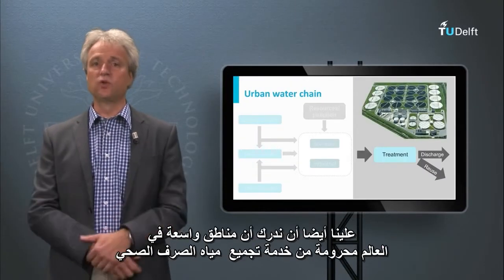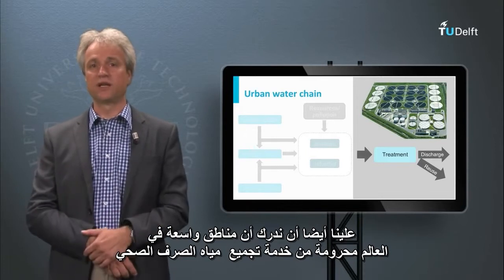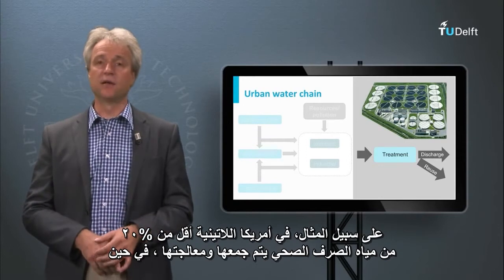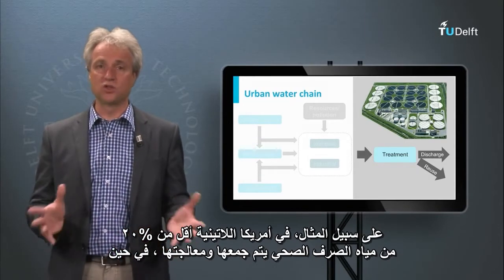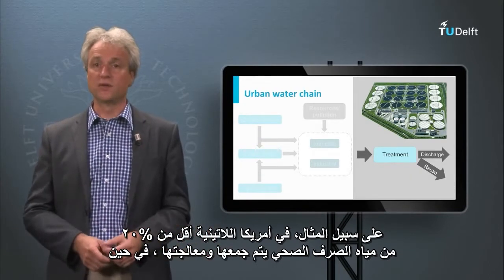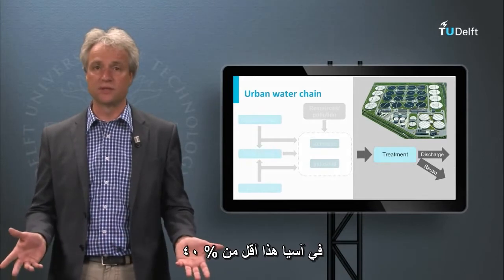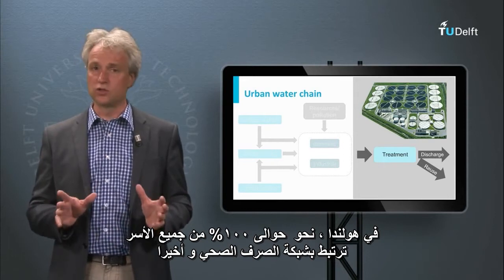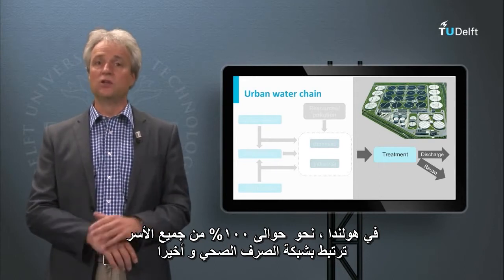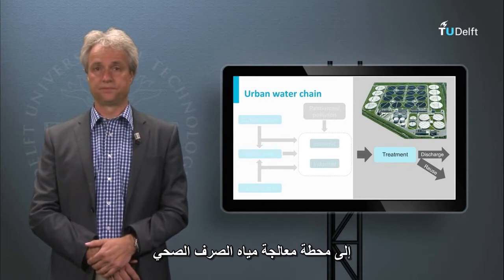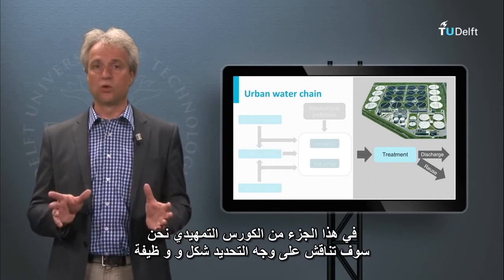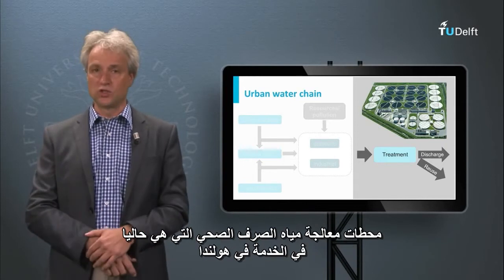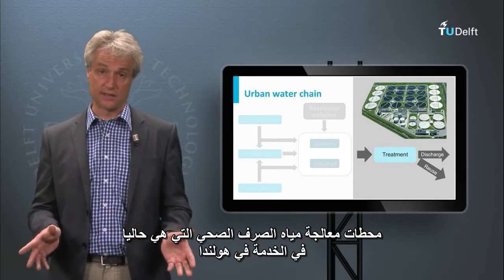We also have to realize that large areas in the world are yet deprived from adequate sewage collection and proper treatment. For instance, in Latin America less than 20% of the sewage is collected and treated, whereas in Asia this is less than 40%. Here in the Netherlands about 100% of all households are connected to the sewage network, and finally to a sewage treatment plant. In this part of our introductory course we will specifically discuss the setup and functionality of the sewage treatment plants that are currently in operation in the Netherlands.